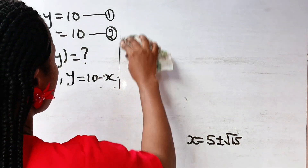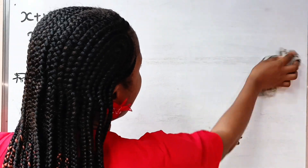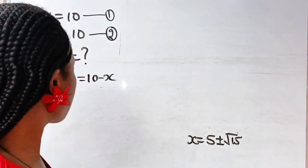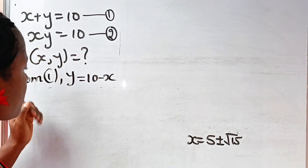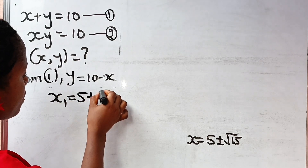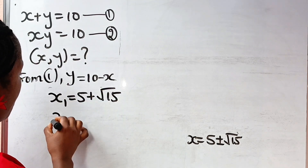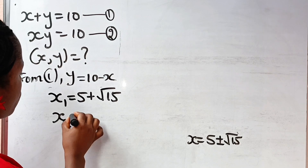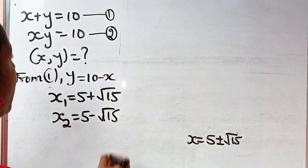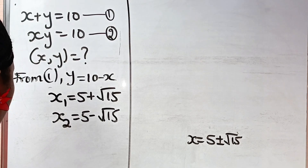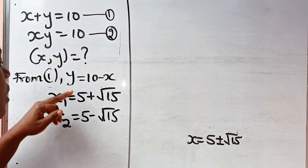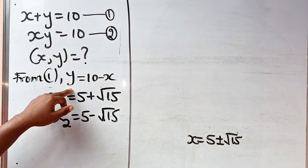Like I said, we have two values of x. So we can write that x₁ is 5 plus root 15, and x₂ is 5 minus root 15. But remember that we are also looking for the value of y, and from equation 3, y is equal to 10 minus x.